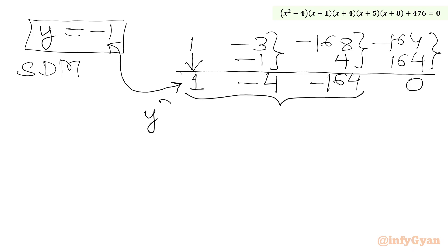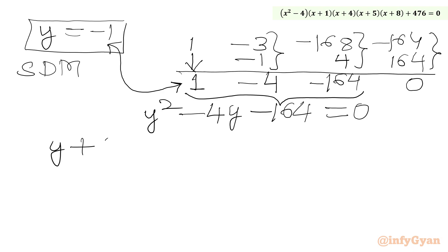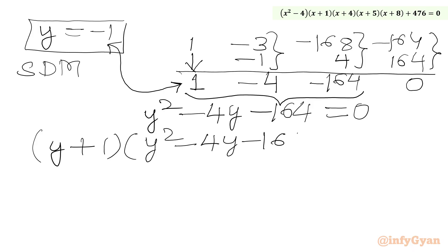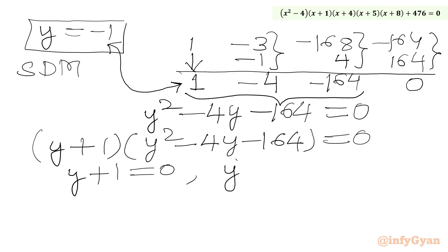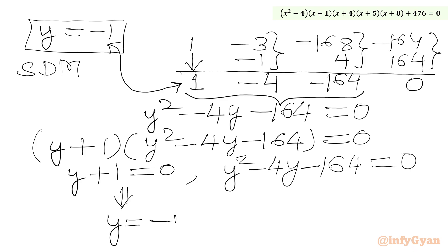So we can write the factorization as (y + 1)(y² - 4y - 164) = 0. From the first factor, y + 1 = 0 gives y = -1. Now we have to solve the quadratic equation y² - 4y - 164 = 0.